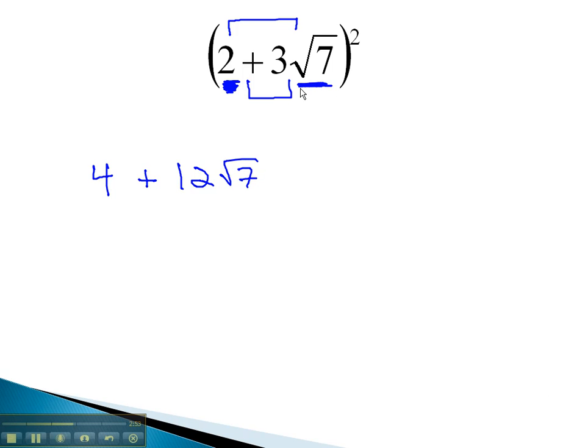Finally, we'll square the last term. 3 squared is 9, and when we square the square root of 7, the square root and squared are inverses, leaving just the 7. Now, we just have to simplify what's left by multiplying 9 times 7, and we have 4 plus 12 root 7, plus 63.